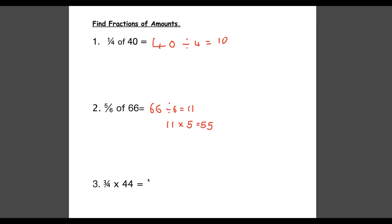So again we follow the same steps. 44 divided by the denominator, 4, is 11. And then we multiply our answer by the numerator which is 3. So 11 multiplied by 3 is 33. So our answer is 33.